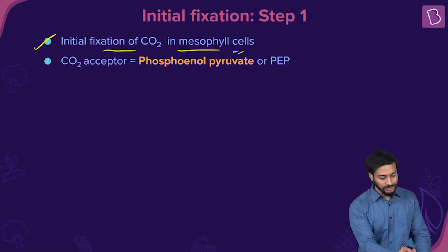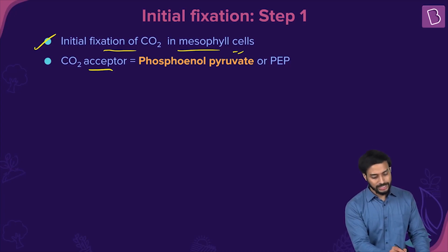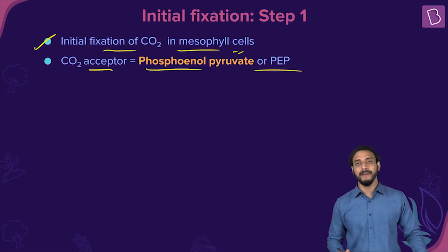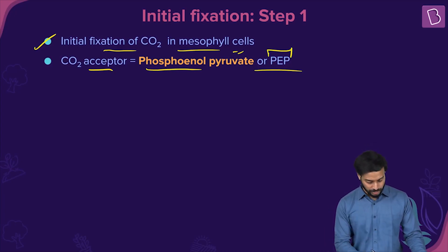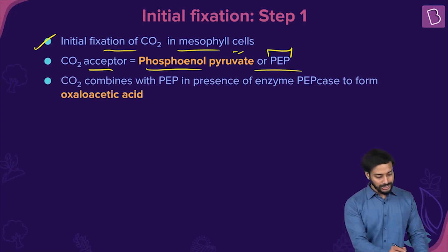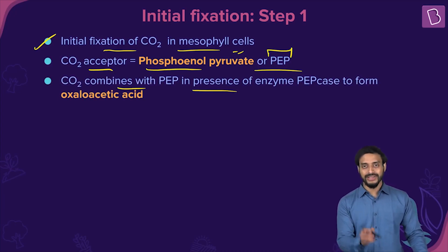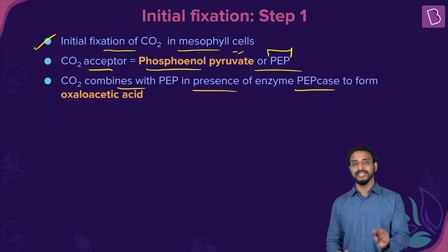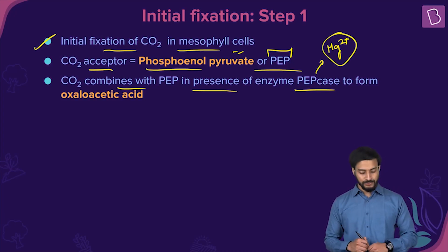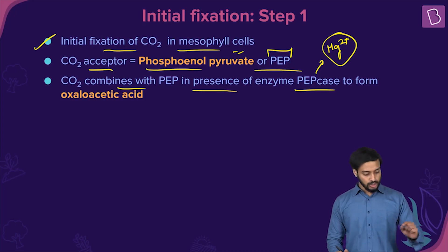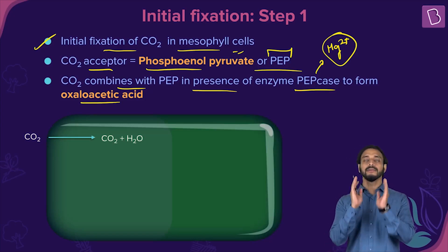The first acceptor of carbon dioxide is phosphoenolpyruvate, or PEP. Carbon dioxide combines with PEP in the presence of an enzyme known as PEP carboxylase, or PEPcase. This enzyme requires Mg²⁺ for its function, and it produces oxaloacetic acid.